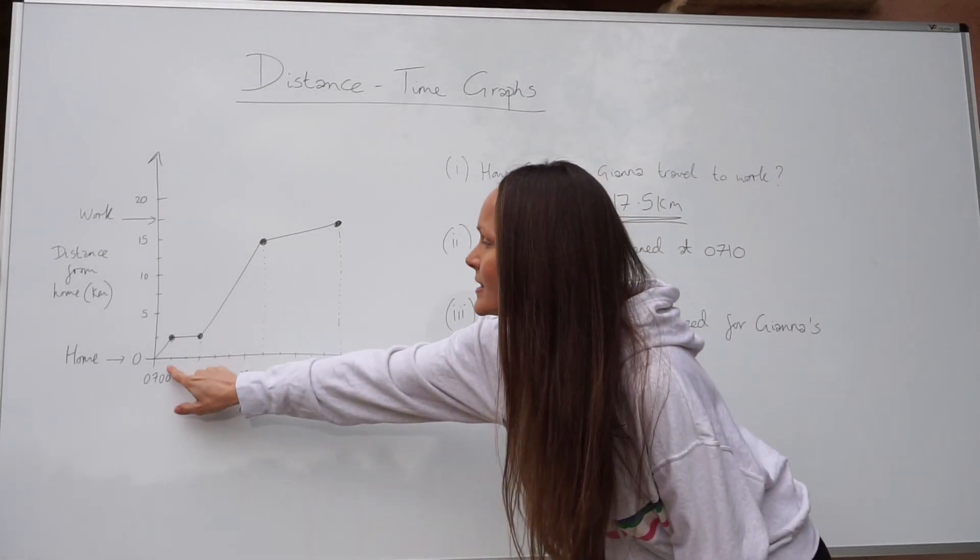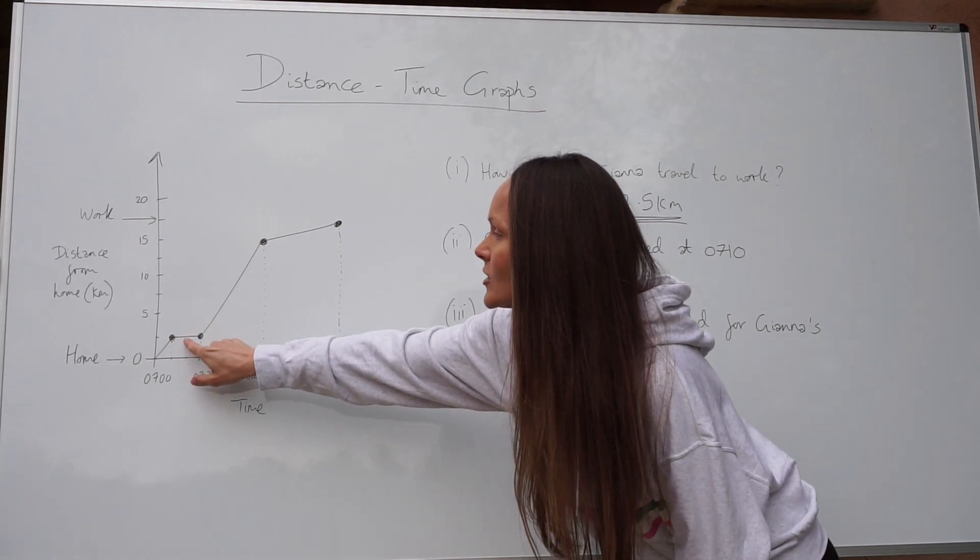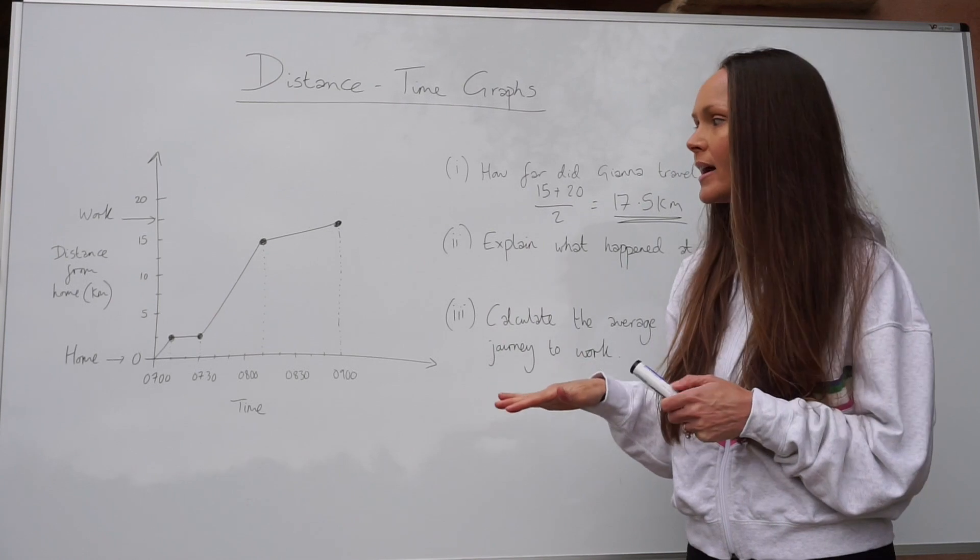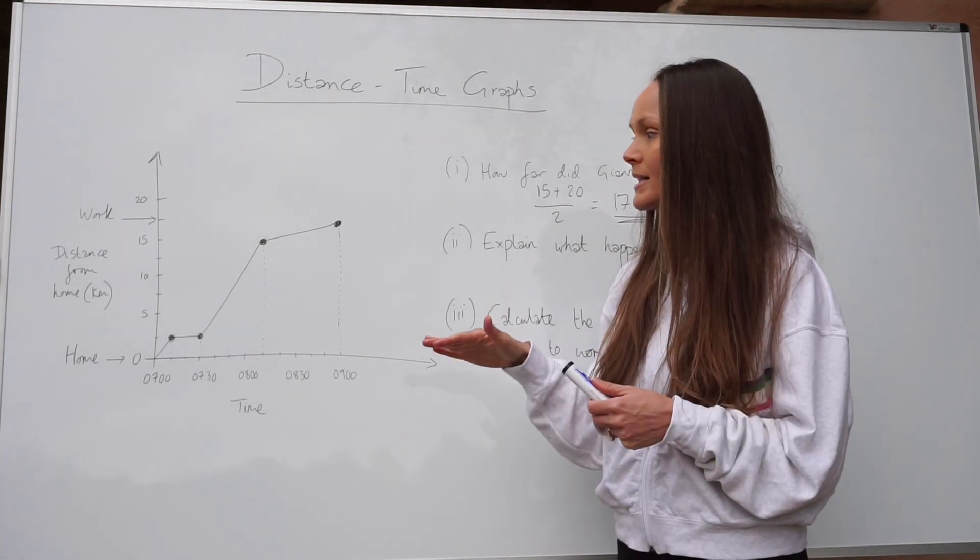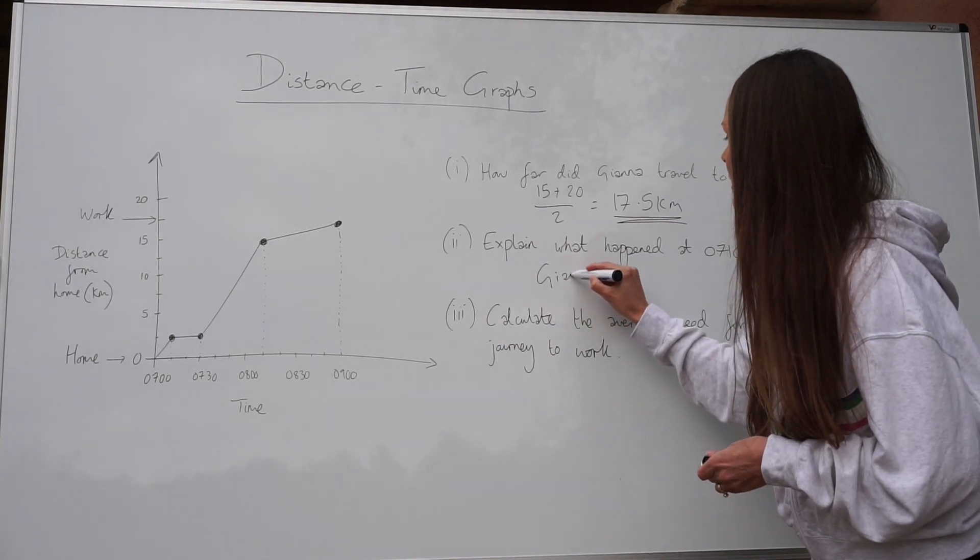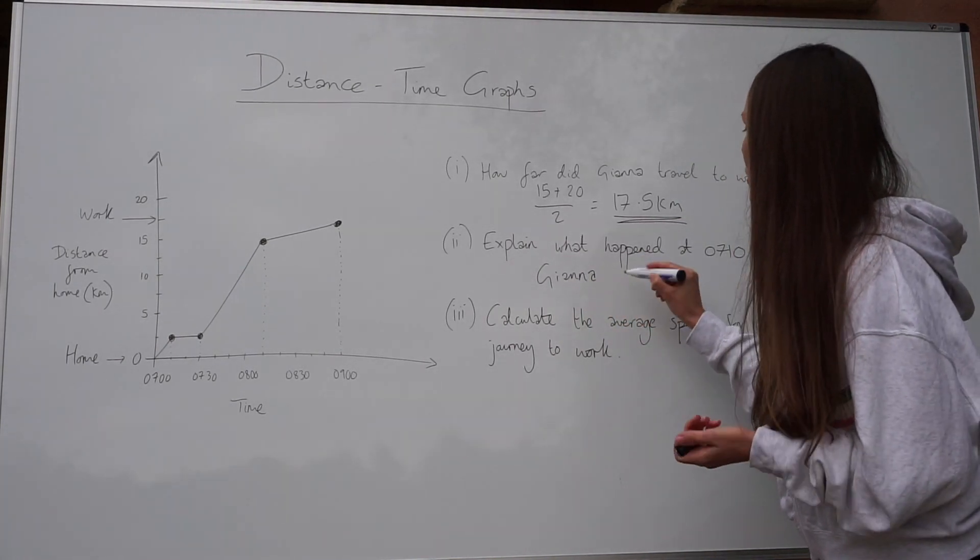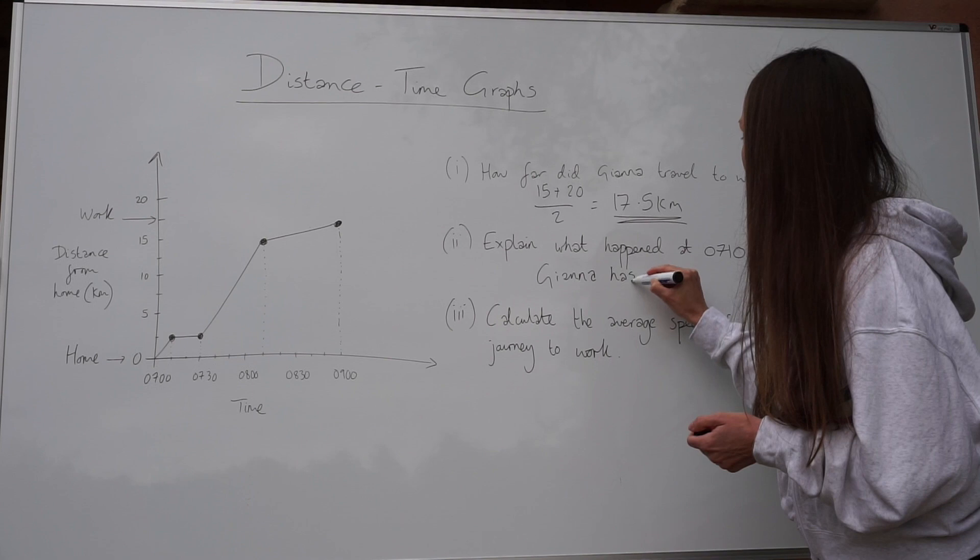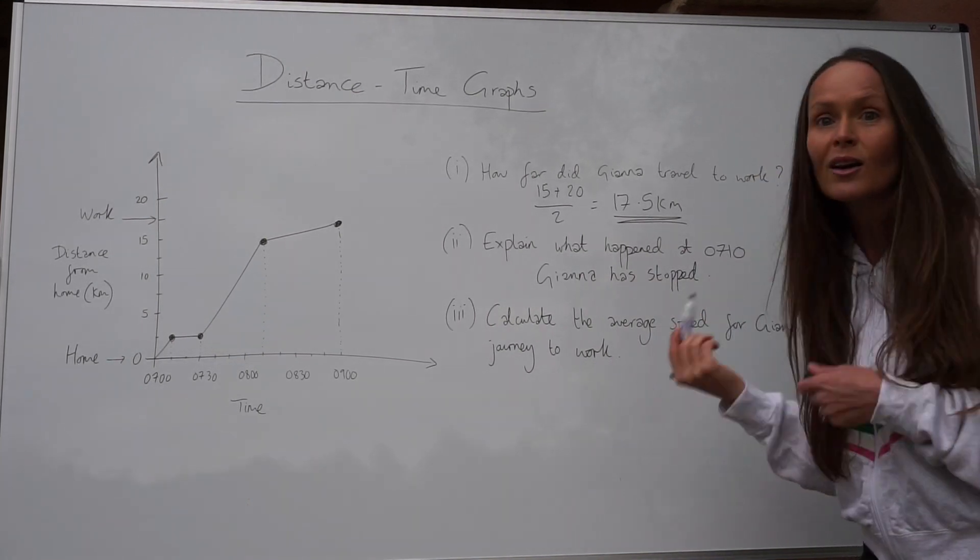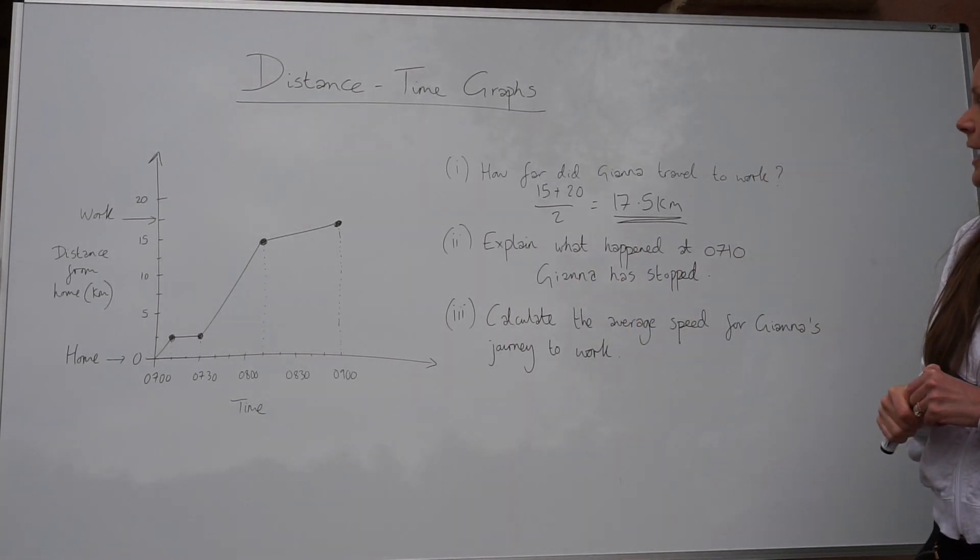So at 7.10, we can see this is where she's stationary. Do you remember I said earlier, whenever you see a horizontal line on a distance time graph, it means the person has stopped. So you just need to write that Gianna has stopped or Gianna stopped moving or Gianna is stationary, something along those lines and that will get you the marks.